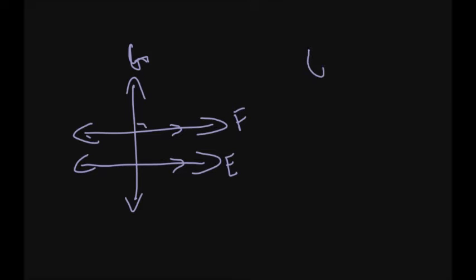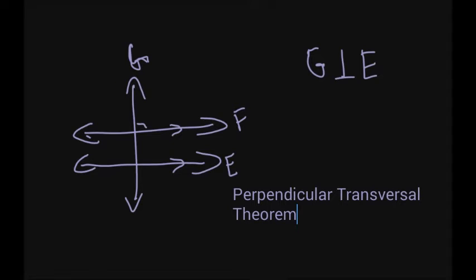that G is perpendicular to E. Notice that symbol I used in between the G and E—that means perpendicular. And there's a name to this theory, and that's called the perpendicular transversal theorem. So if you know two lines are parallel and one of them is perpendicular, you know the other one is perpendicular, which is the perpendicular transversal theorem.